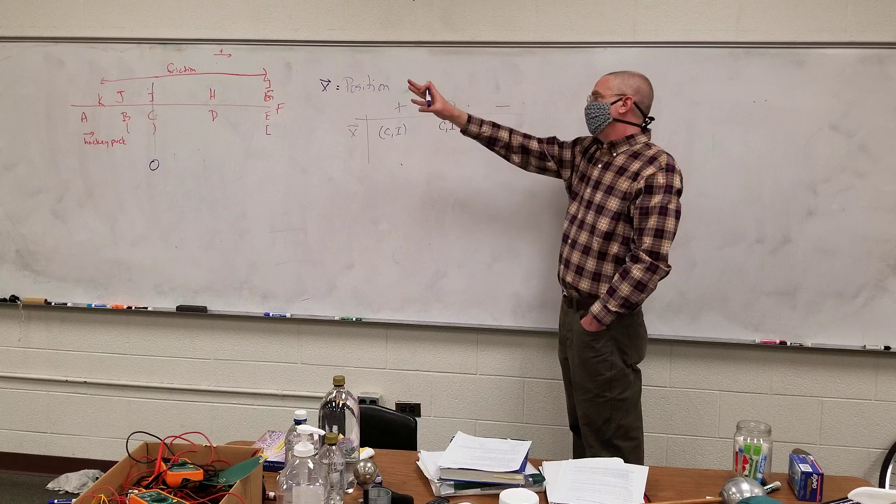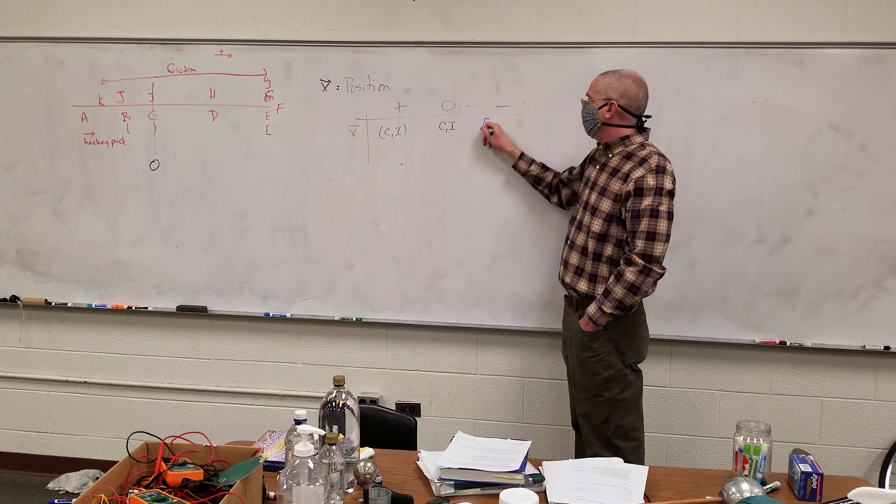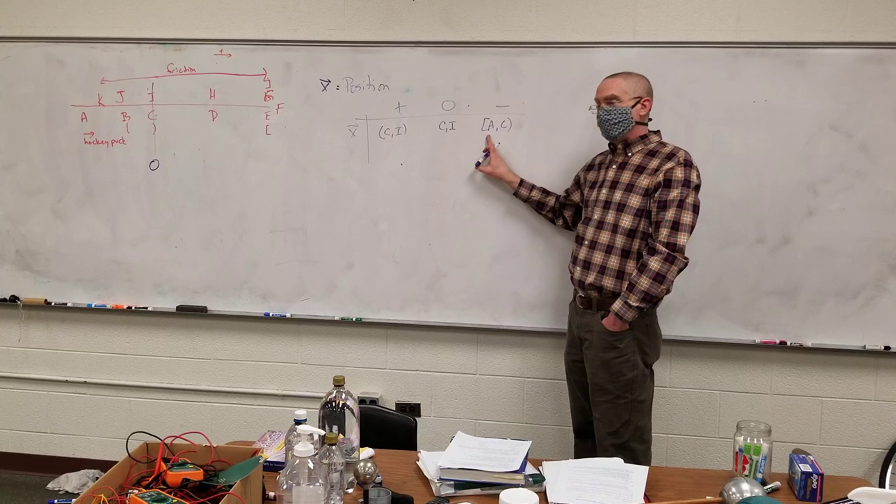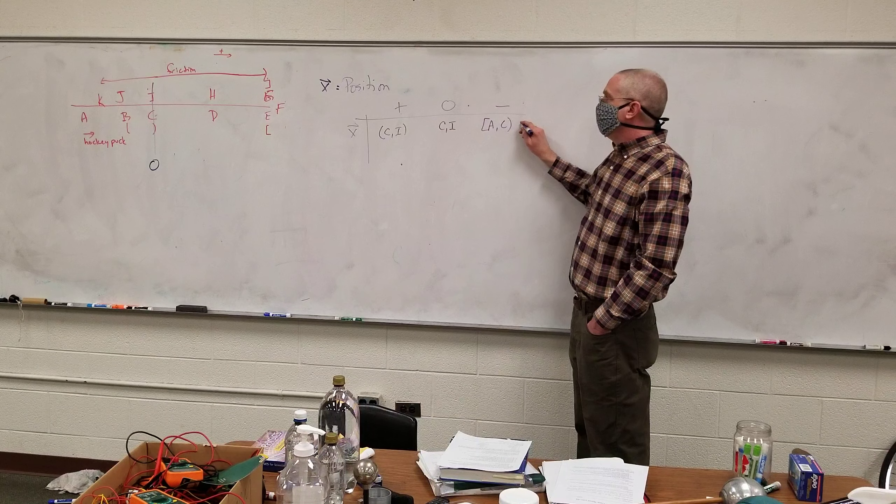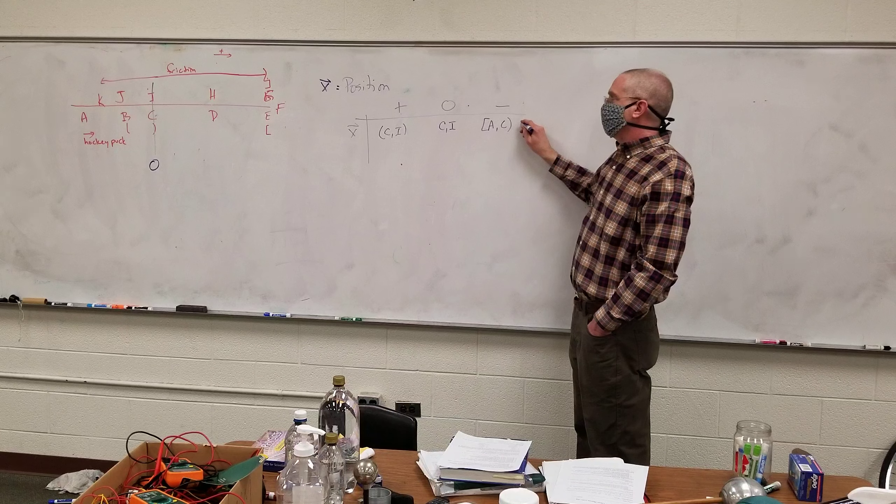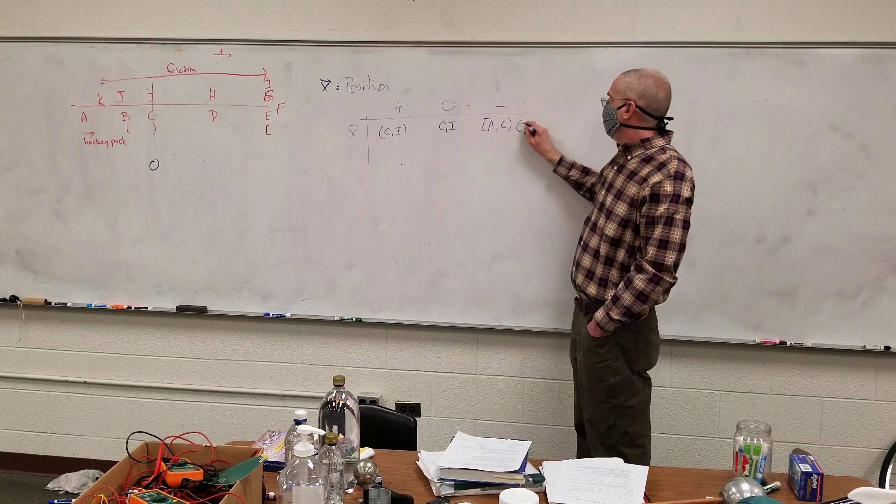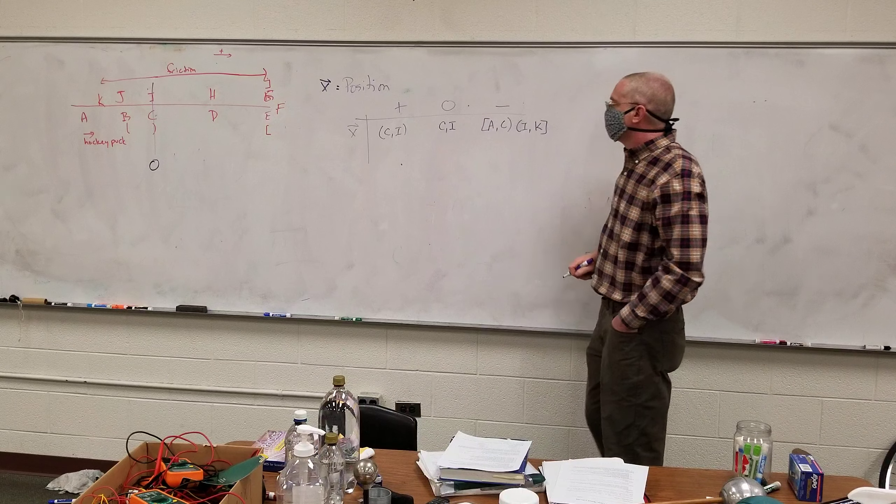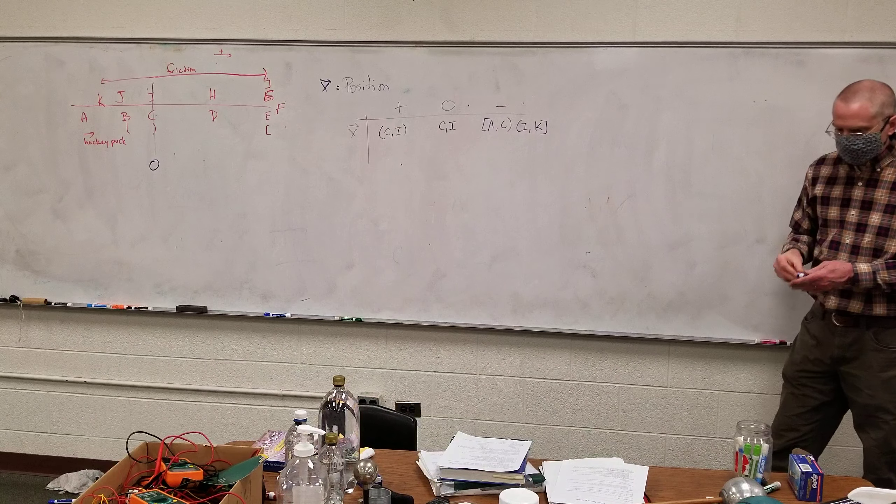And then it's negative on the other side, so from A to C, I am including A, that's why there's a bracket there. And then, I guess, I to J, or I to J.